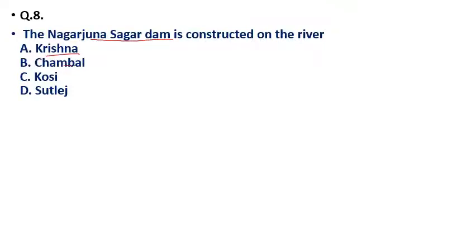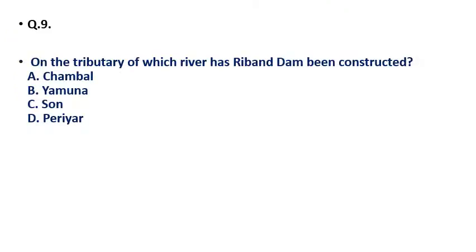Question 8: The Nagarjunasagar Dam is constructed on which river — (a) Krishna, (b) Chambal, (c) Kosi, (d) Satlaj? The correct answer is option A — Krishna. Question 9: On the tributary of which river has Rihand Dam been constructed — (a) Chambal, (b) Yamuna, (c) Son, (d) Periyar? The correct answer is option C — Son. Son is also a tributary of the Ganga.